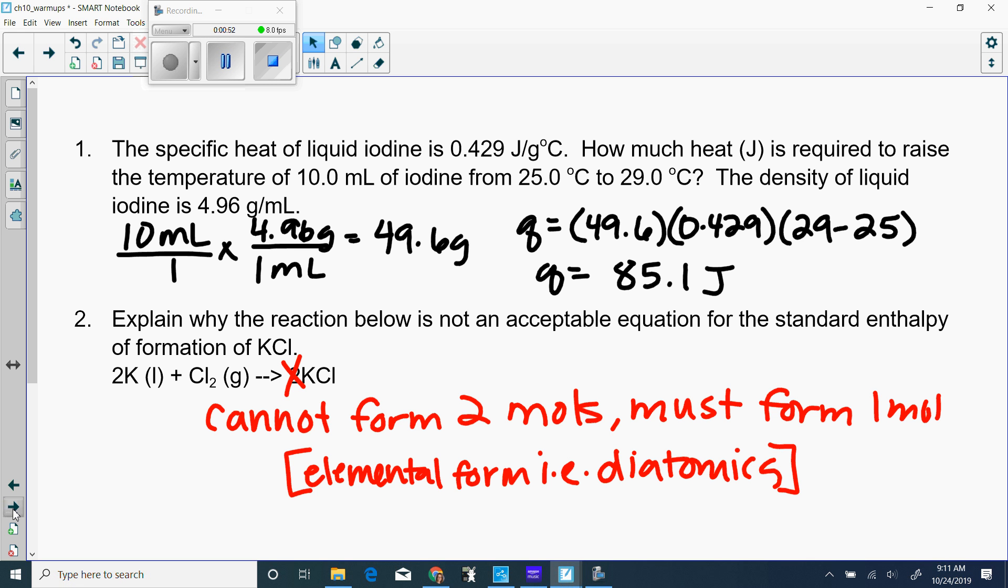Remember for formation, two rules: we have to form one mole of the product and everything has to be elemental, so that means diatomics need to be diatomics. Things that aren't diatomics don't show up as diatomics.